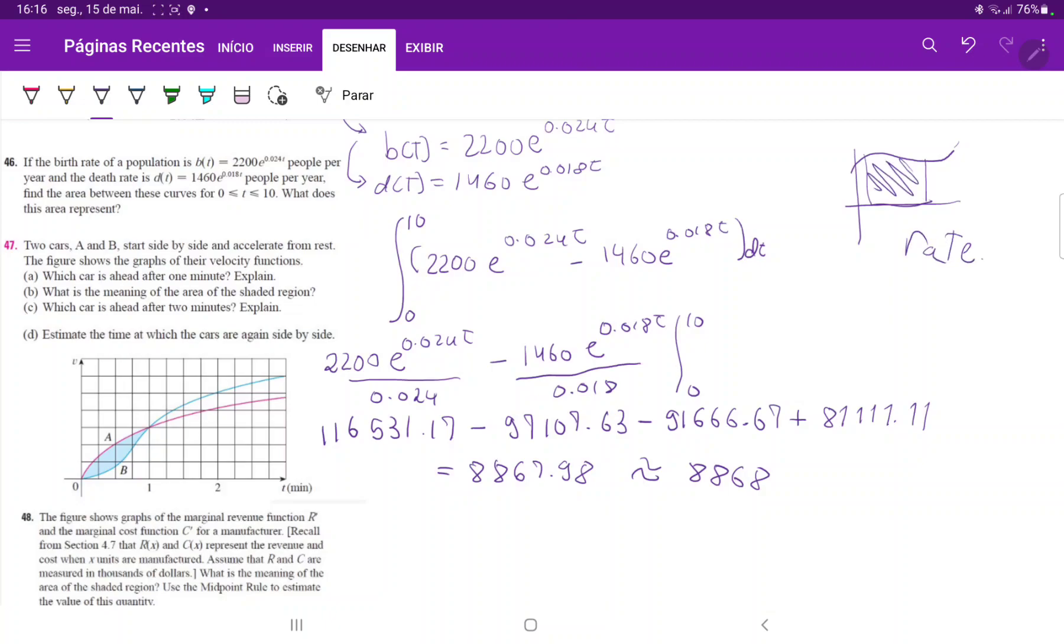so this is rate times time, right? So we're really just taking the total birth rate times time, so the total birth rate, so total births minus total deaths. So this gives us the growth of the population. So between the year 0 and 10, the growth of the population was roughly 8868.